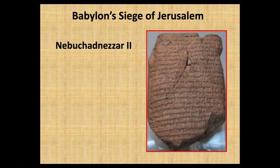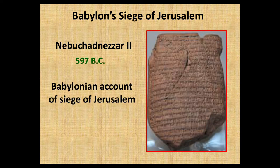One of the interesting things is we actually have a record of the siege of Jerusalem by the Babylonians. There were three invasions, and Nebuchadnezzar led one of them around 597 BC. This is an actual account from the Babylonian perspective of that invasion. You can read the biblical account in 2 Kings chapter 24.